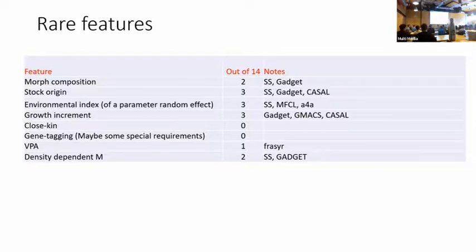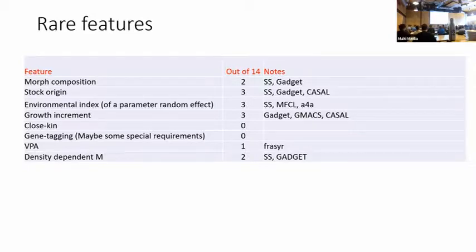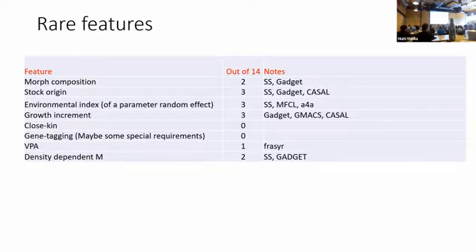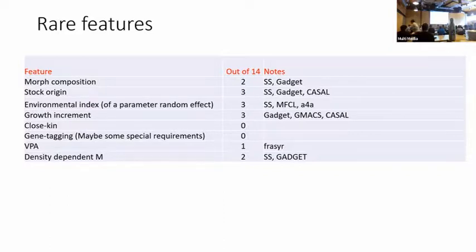Related to this — I know the title was General Models, but close-kin and gene tagging have been implemented in an AD Model Builder age-structured model. So I wonder if there should be a catch-all 'other models' category — not that there are other general models, but there might be examples already done that could be borrowed for future development. If someone said the close-kin genetics likelihood hasn't been written, I know Rich has written the likelihood for close-kin genetics. This was more a comparison of general stock assessment methods and what features they have — not necessarily custom-built models.